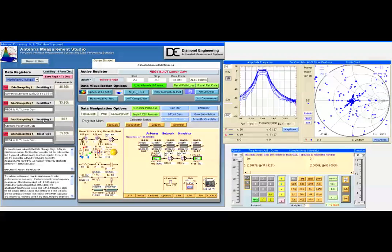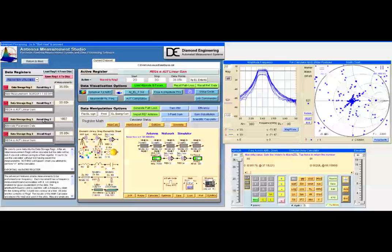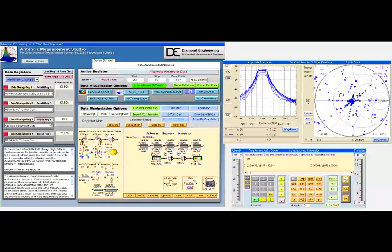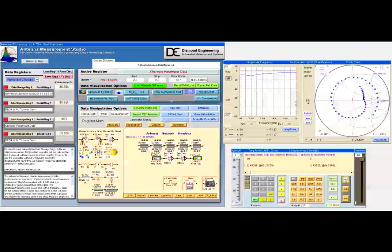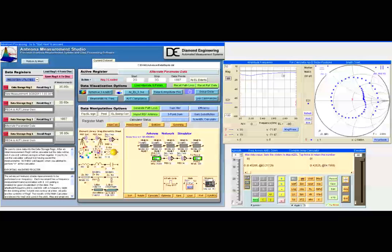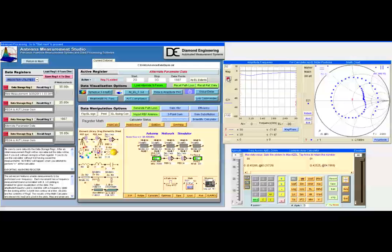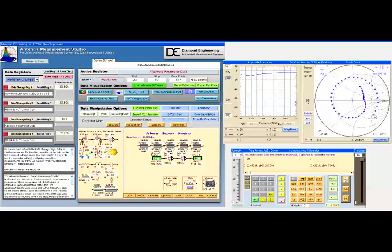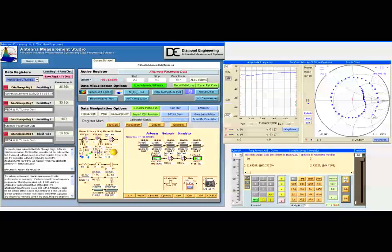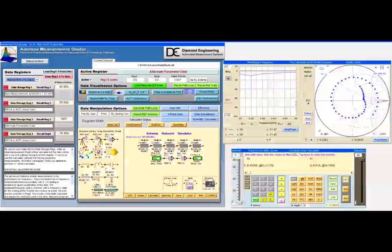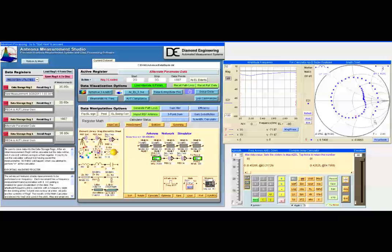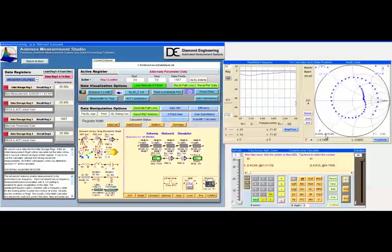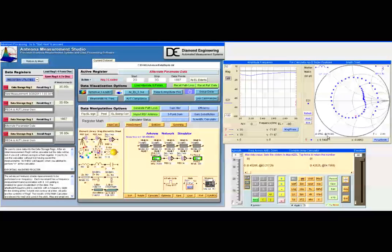Next, I'm going to recall the alternate parameter, which was the measured dipole match. When I recall the alternate parameter, I see the measurement in dB or I can specify linear. And I see on the smith chart the actual phase and magnitude of the mismatch. If I place a marker on a data element, the frequency and the magnitude of that reflection are displayed.